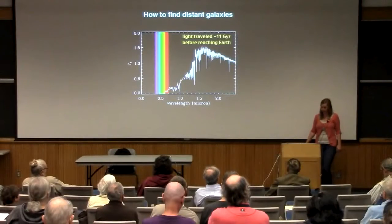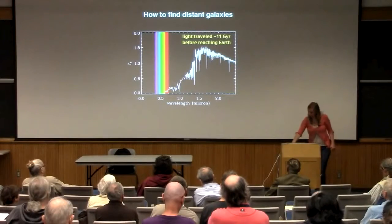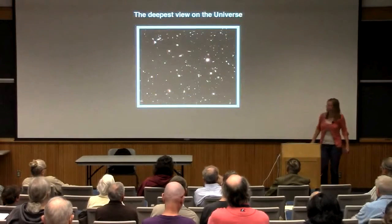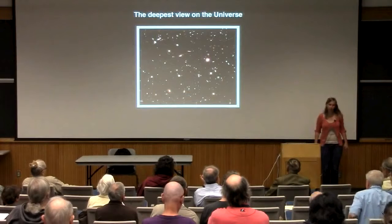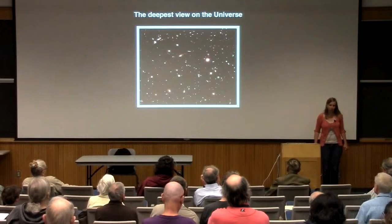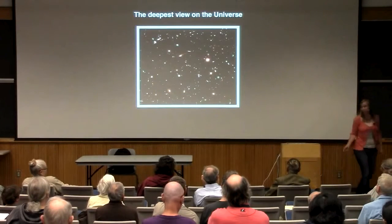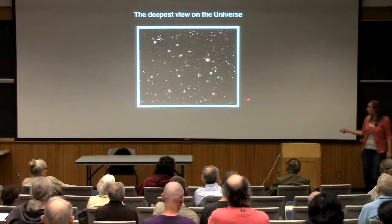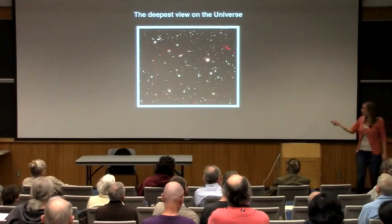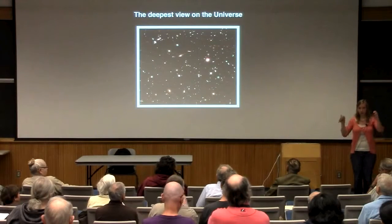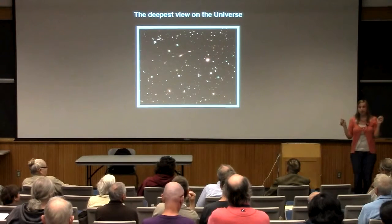For infrared wavelengths — and here you see one of the deepest views of the universe, taken with the Hubble Space Telescope. This is actually not real visible colors what you're seeing here. What you're seeing here is a combination of different infrared colors.